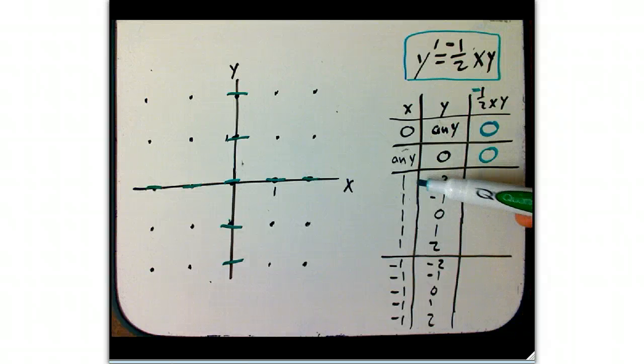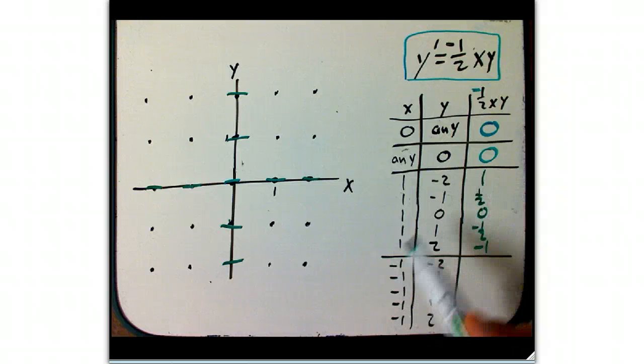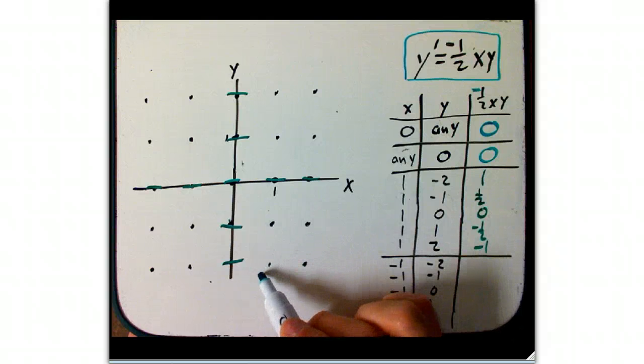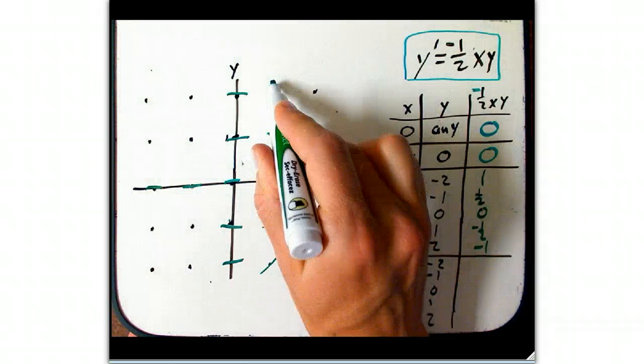Now, what about if x equals 1 and y is various different values? I'm just going to plug these in real quick. x is 1. Minus 2 times minus 1 half is 1. And that's 1 half. That's 0, which I already knew. That's minus 1 half, minus 1. Now I'm just going to put those in. These are all along this line. And here it's going to be slope 1, slope 1 half, slope 0, slope minus 1 half, slope minus 1.